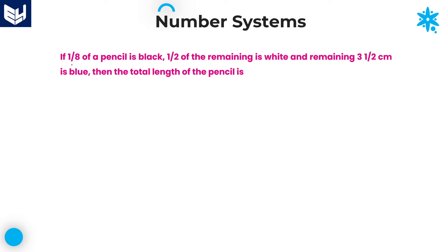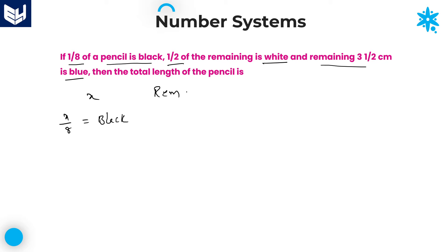Next question. If 1/8 of a pencil is black, half of the remaining is white, and the remaining 3 and 1/2 centimeters is blue, then what is the total length of the pencil? Let us take the total length of the pencil as x. In this, x/8 is black. So if x/8 is black, what is the remaining left over? You need to subtract the black value from the total: x minus x/8, which is equal to 7x/8. That is the remaining value.